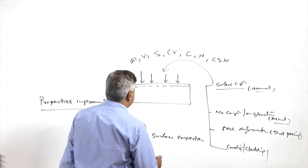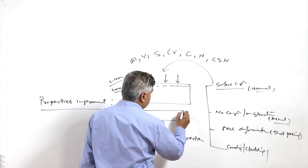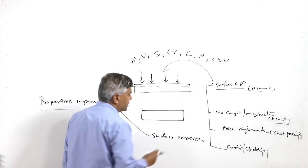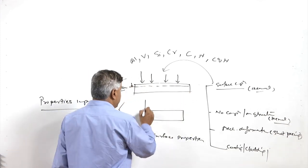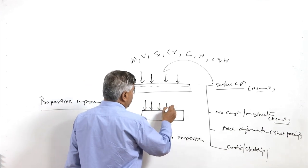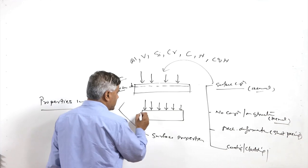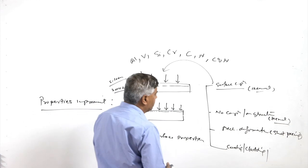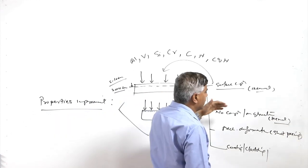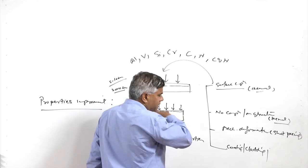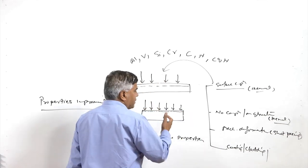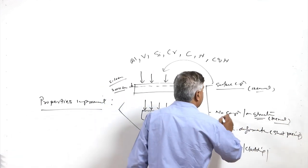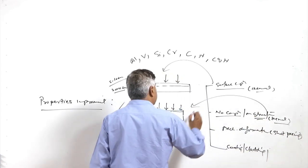Another method applies only thermal treatment. For metal systems that undergo structural modification when heat is applied, controlled heating followed by controlled cooling results in structural modification near the surface. This approach modifies the structure at the functional surface as per requirements. Methods such as laser hardening and flame hardening bring about only structural changes at the surface without any composition modification.